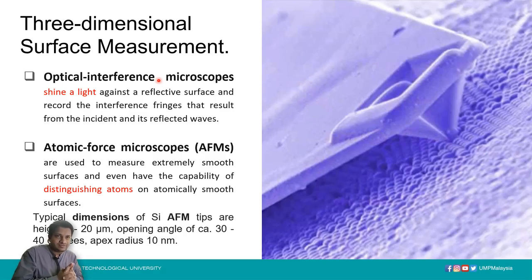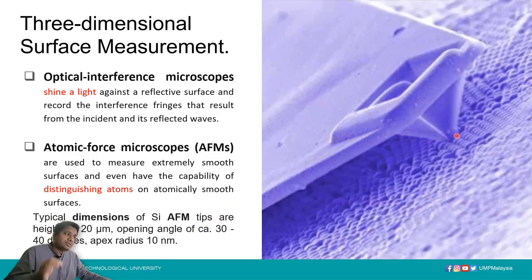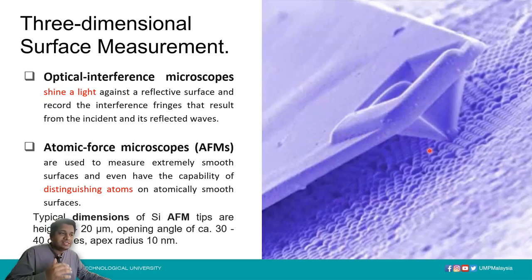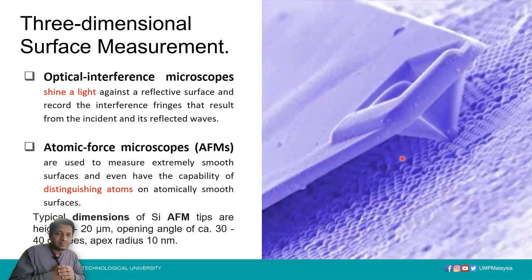Atomic force microscopy is the most precise surface roughness measurement equipment. It uses an AFM tip with a height of about 8 to 20 microns, specific opening angles, and an apex radius of around 10 nanometers. With this microscope we can go as deep as atoms and feel the texture of atoms. AFM is used to measure the roughness of very smooth surfaces, because on very rough surfaces the probe tip can become damaged.